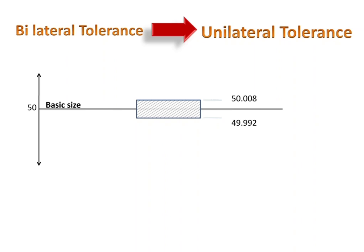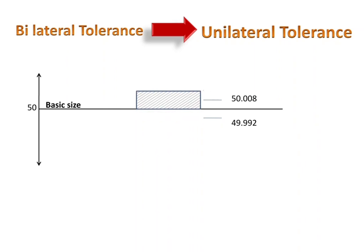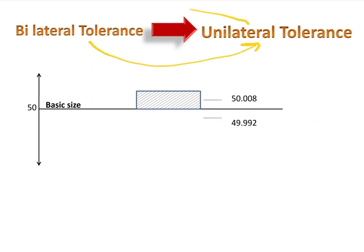This was our problem of bilateral tolerance, and if we are going to shift the tolerance zone, you can see the upper limit and lower limit of the job both change — which is not acceptable. We always have to keep in mind that job dimensions should not change while converting between bilateral and unilateral tolerance systems, and that is not possible by shifting the tolerance zone.